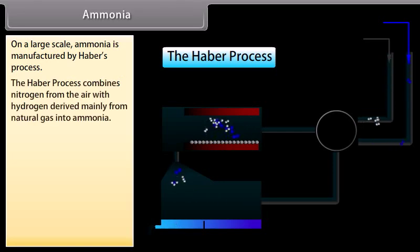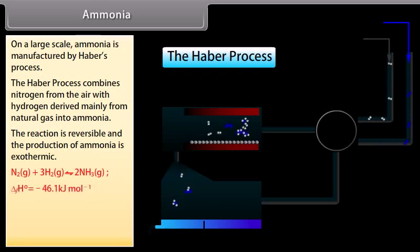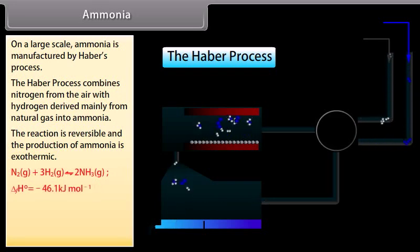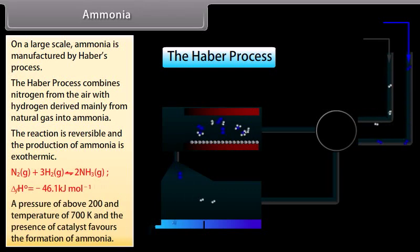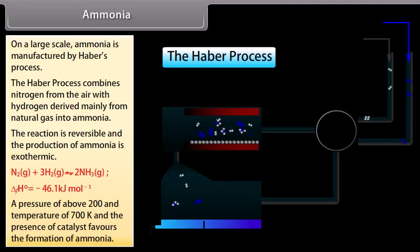The Haber's process combines nitrogen from the air with hydrogen derived mainly from natural gas into ammonia. The reaction is reversible and the production of ammonia is exothermic. A pressure above 200 atm, a temperature of 700 Kelvin, and the presence of a catalyst favour the formation of ammonia.